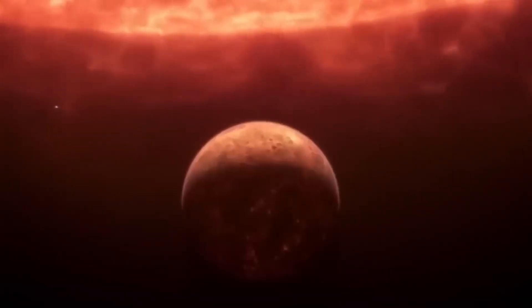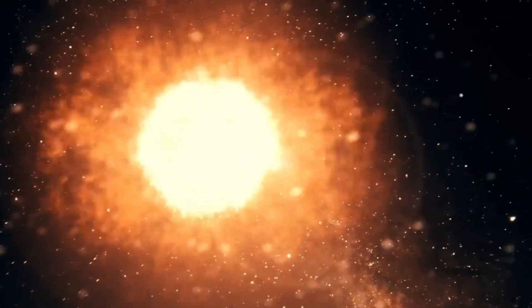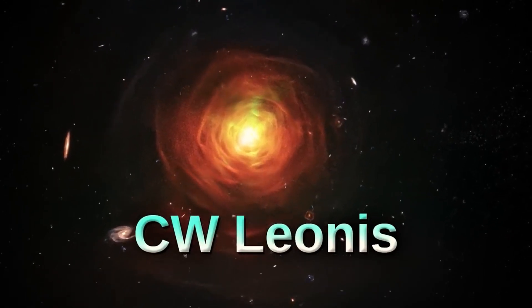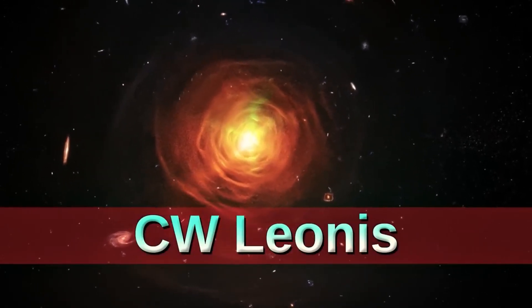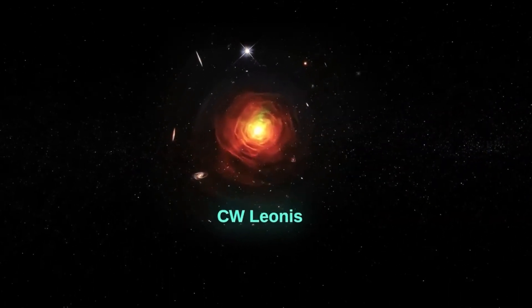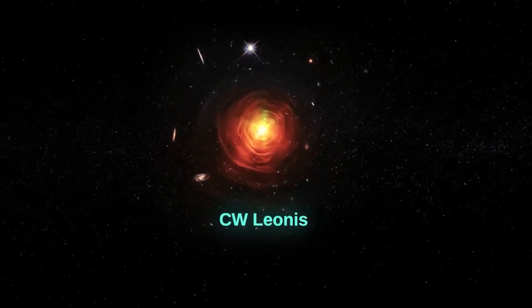Recently there was a case of Betelgeuse. This red giant is about to explode, and if it does it will be visible from Earth. But now there is a new star, CW Leonis, which is closer to us than Betelgeuse and it is also at its last stage. Can this be the reason for Earth's destruction?